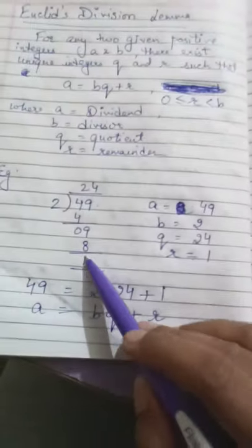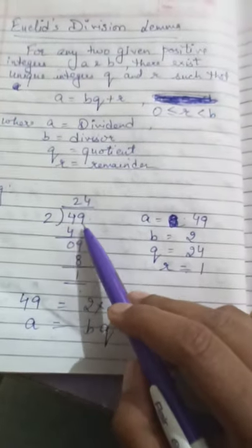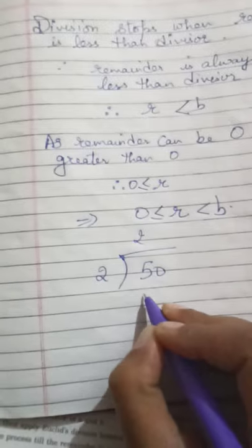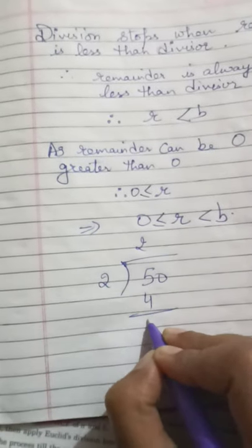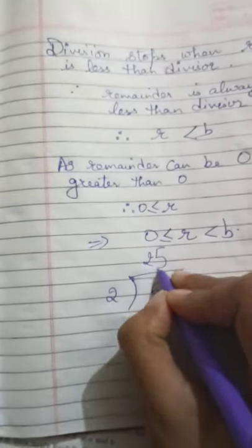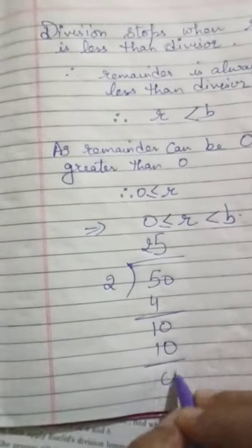Suppose this number was 50. Then if I divide 50 by 2, what happens? Here, I will write 5. The remainder will be 0.